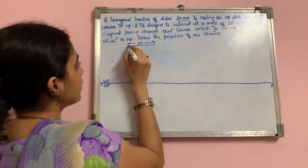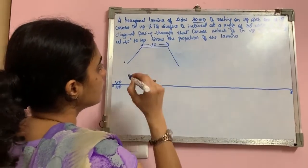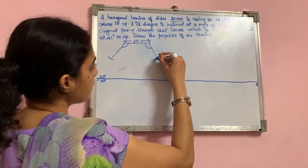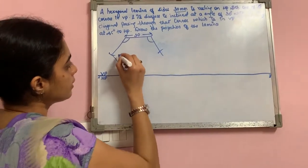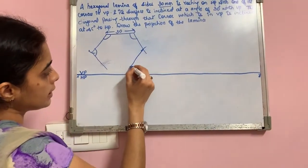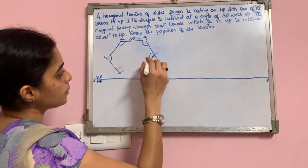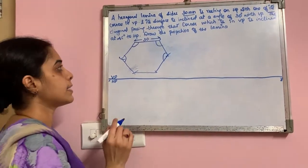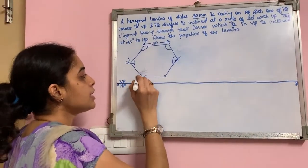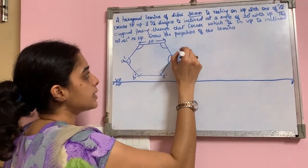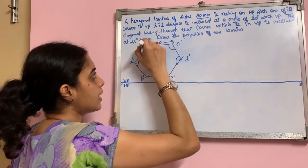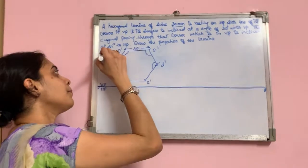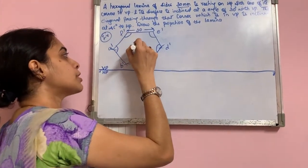Please show the dimension as 30 mm. Take the interior angle as 120°, then measure 30 mm and cut an arc; measure 30 mm and cut an arc. Again take interior angle of 120° here, interior angle of 120°, measure 30 mm and cut an arc; measure 30 mm and cut an arc, then join. You will get the required hexagonal lamina. Name it as A dash, B dash, C dash, D dash, E dash, and F dash in any order as per your convenience. This gives the true shape of the front view.